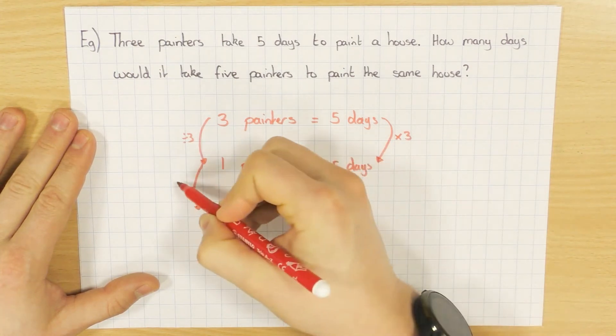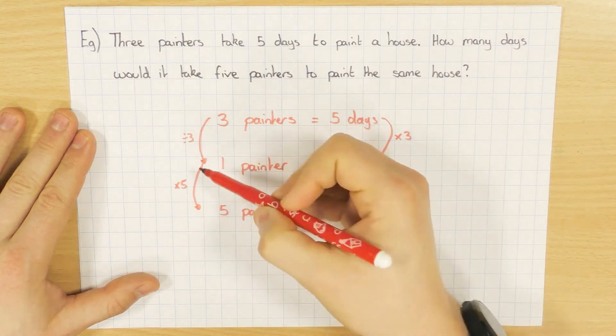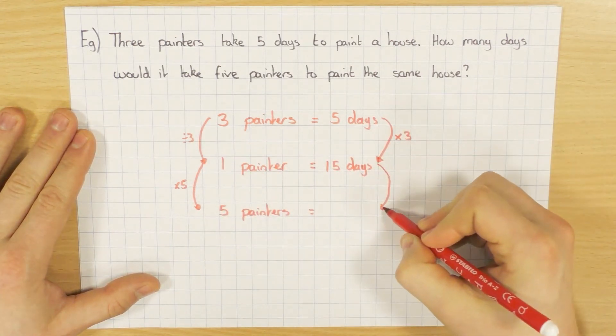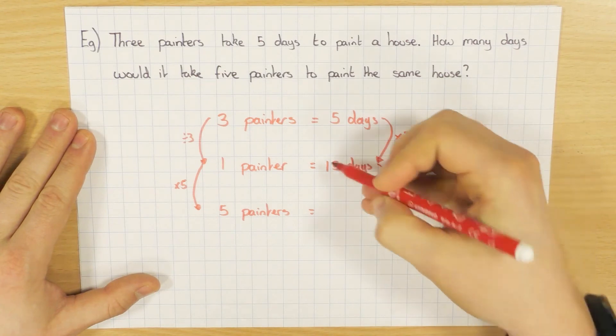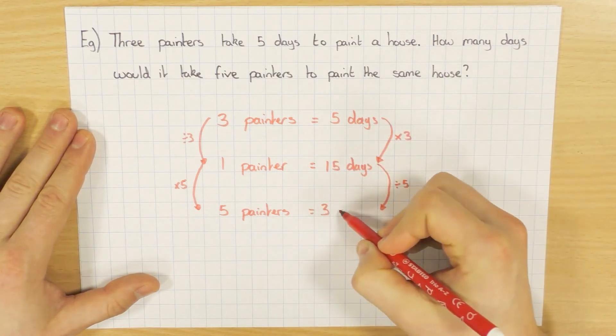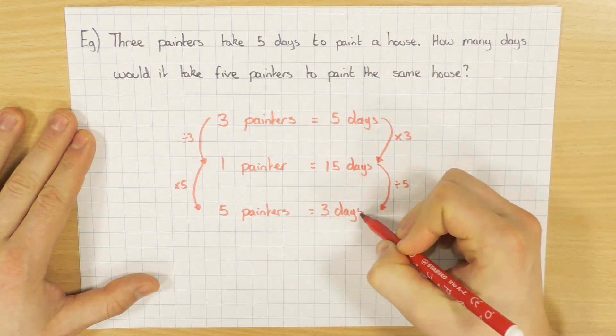To do the job. How do you go from one to five? I times by five. Again, inverse. So if I times by five here, do the opposite and divide by five here. Fifteen divided by five is three days.